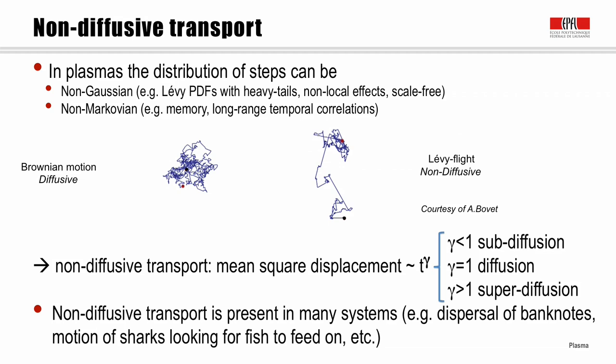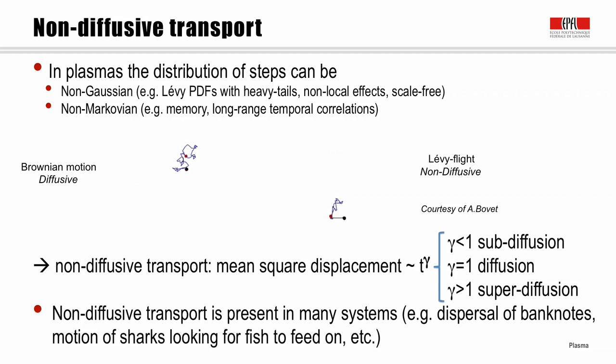Two movies illustrate the difference between two situations. On the left is Brownian motion — a particle undergoing uncorrelated steps of the same size or a Gaussian-distributed size. On the right is a simulation of a so-called Lévy flight — a non-diffusive transport in which there is a finite probability of having very large jumps, as opposed to the exponentially small probability of large jumps in classical Brownian motion.